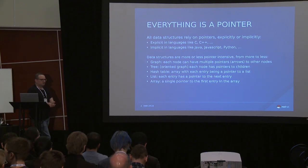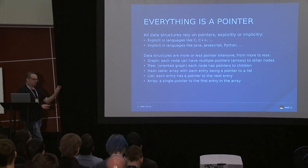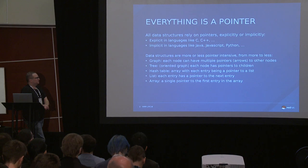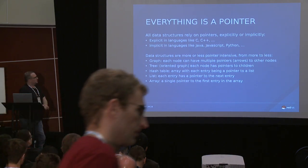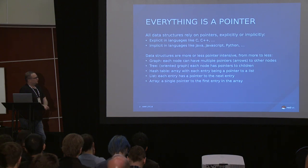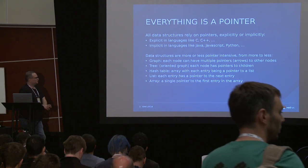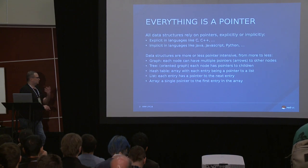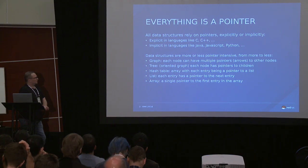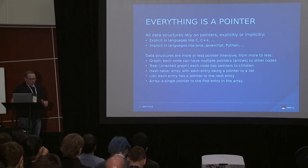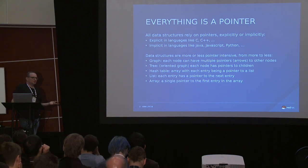When you have a graph, every arrow inside your graph is going to be a pointer. A graph is one of the most complex data structures you can think of. Trees use fewer pointers — a balanced tree usually has two children, so only two pointers per node. A hash table is an array of pointers. A list, depending on whether it's doubly or singly linked, has one or two pointers. Pointers are what you rely on for all your data structures, whatever the language.